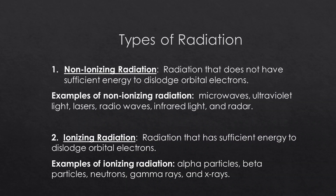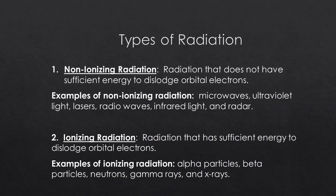There are two different types of radiation. The first is non-ionizing radiation — this is radiation that does not have sufficient energy to dislodge orbital electrons. Examples include microwaves, ultraviolet light, lasers, radio waves, infrared light, and radar. The second type is ionizing radiation, which has sufficient energy to dislodge orbital electrons, such as alpha particles, beta particles, neutrons, gamma rays, and x-rays.